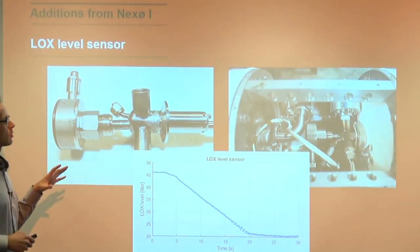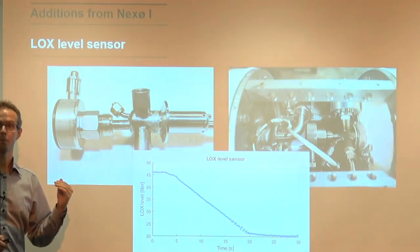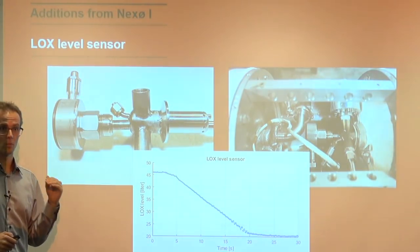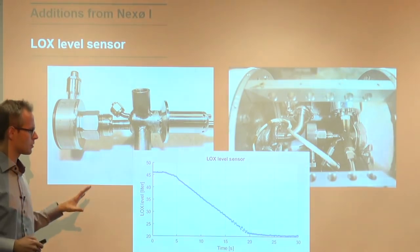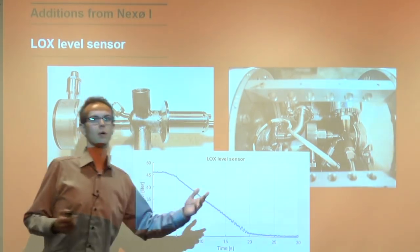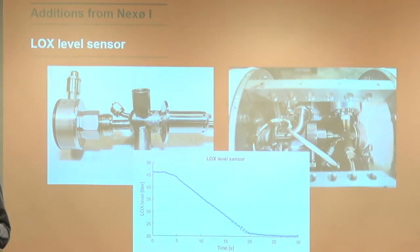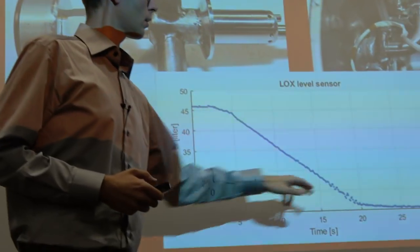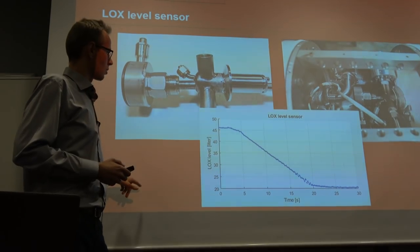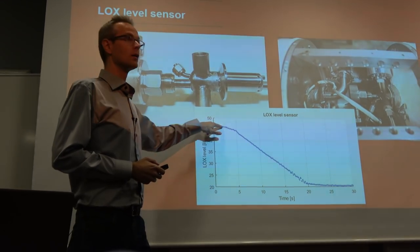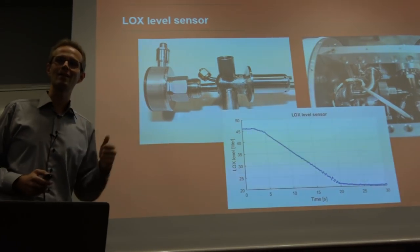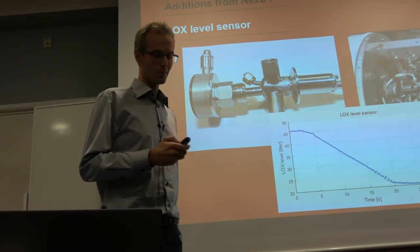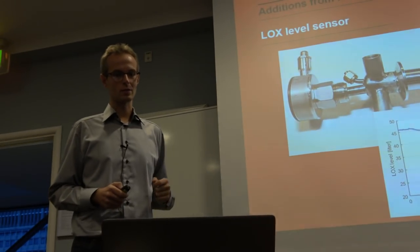We use the LOX level sensor when we fill the rocket. It's very important that we fill the right amount of liquid oxygen on board. This graph is actually the opposite, this is when the engine is running, so we can also see when it empties out. That's not so important, we don't use this data for anything. But when we fill it, we fill it to a very certain amount, and that's the important thing.